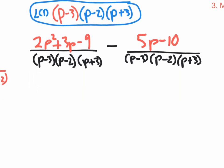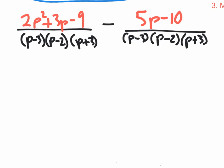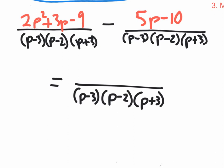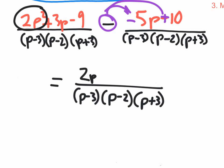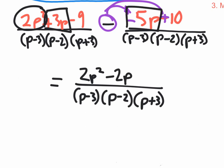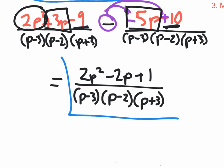For the second fraction: comparing to the LCD, P minus two is missing, so multiply top and bottom by P minus two. Distributing five times (P minus two) gives five P minus 10. Now subtract the numerators over the LCD. Because of the minus sign, distribute it: negative five P and positive 10. Combining like terms: two P squared stays; three P minus five P is negative two P; negative nine plus 10 is positive one. The answer is two P squared minus two P plus one over the LCD. You cannot factor the numerator further, so that's the final answer.